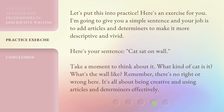Let's put this into practice. Here's an exercise for you. I'm going to give you a simple sentence and your job is to add articles and determiners to make it more descriptive and vivid. Here's your sentence: Cat sat on wall. Take a moment to think about it. What kind of cat is it? What's the wall like? Remember, there's no right or wrong here — it's all about being creative and using articles and determiners effectively.